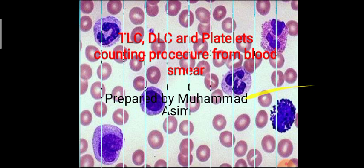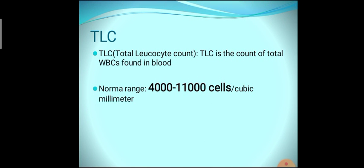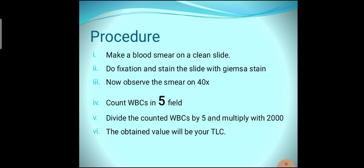TLC — total leukocyte count — is the count of total WBCs found in the body. The normal range of leukocytes or WBCs is 4,000 to 11,000 cells per cubic millimeter. This is the normal range present in every healthy individual. If any changes occur in this level, it is due to pathology. If WBCs increase above 11,000, it is due to infection or other pathology. If decreased below 4,000, it is also due to pathology.